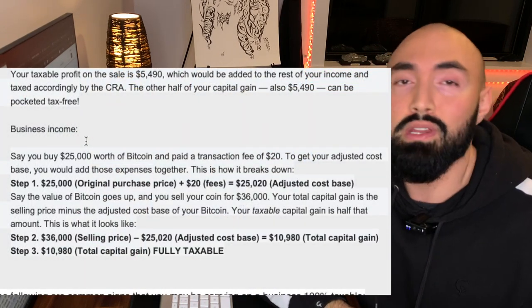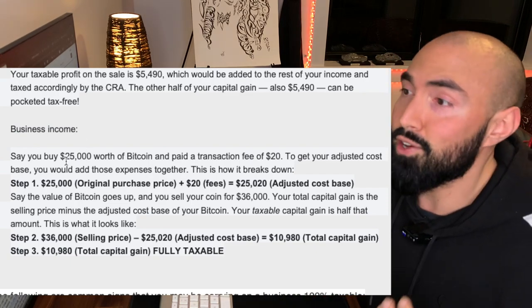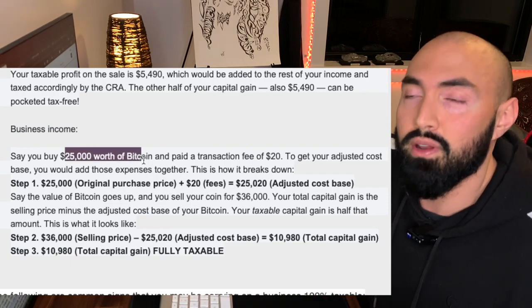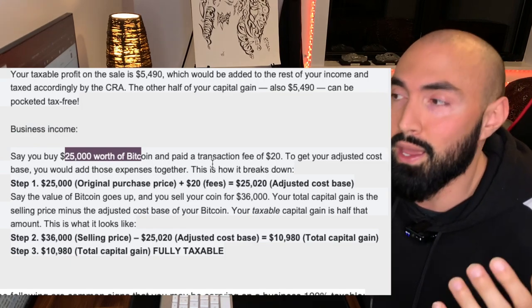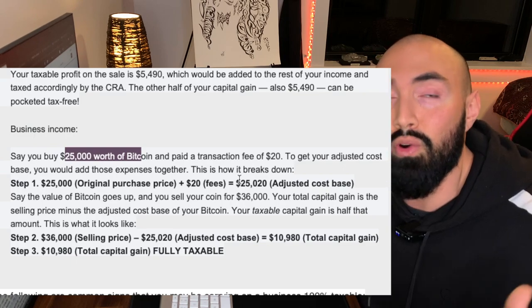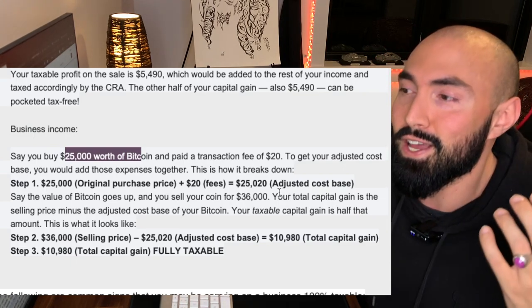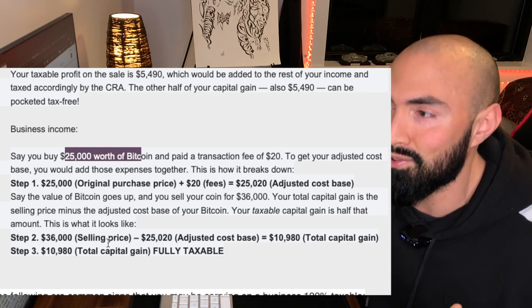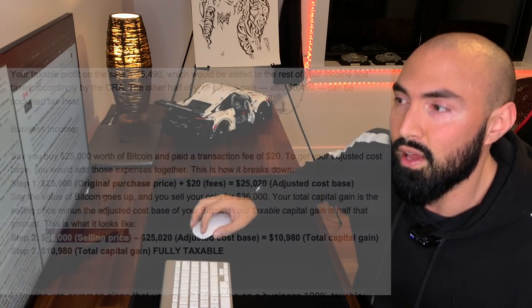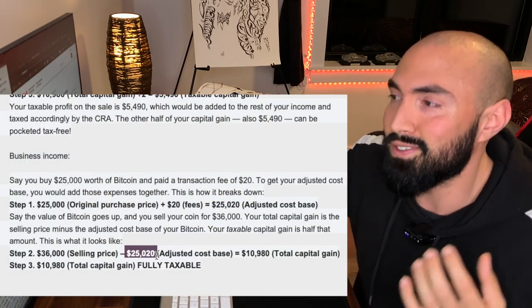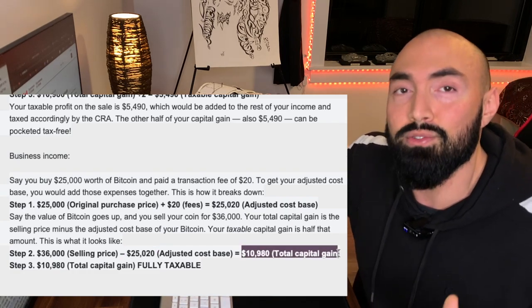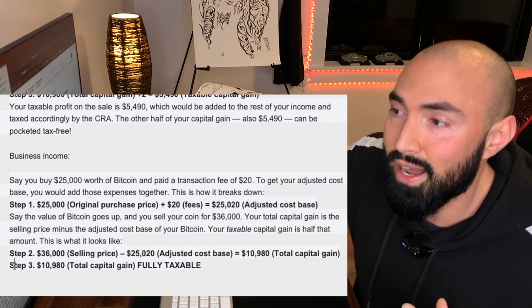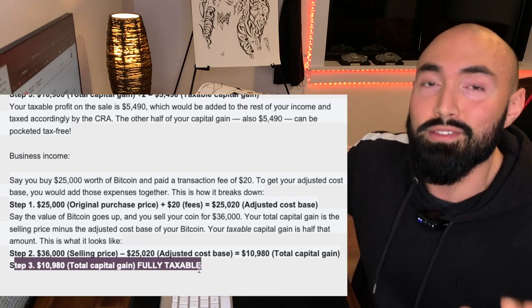Now, how is business income taxed? Using the exact same example: you buy $25,000 worth of Bitcoin with a $20 fee, putting your adjusted cost basis at $25,020. When you sell for $36,000, your profit is $36,000 minus $25,020, which equals $10,980. But as business income, that entire amount is fully taxable. That is the biggest difference — you're going to end up paying a lot more taxes on business income than on capital gains.